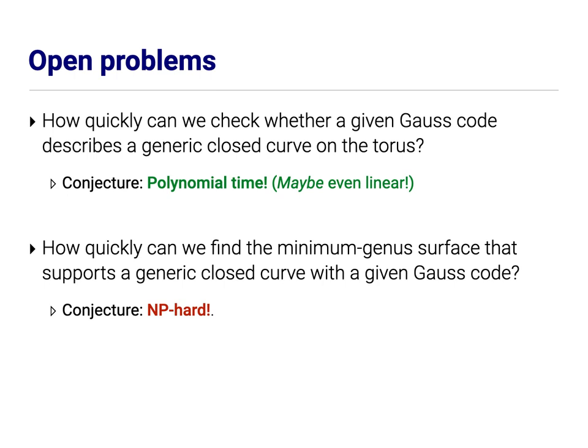So, open question, how quickly can we check whether a given Gauss code describes a generic closed curve on the torus? I think it's plausible that this can happen in polynomial, or maybe even in linear time. But I don't know how to do it. And more importantly, I think it's really unlikely that this problem is NP-hard. There's just not enough structure here. On the other hand, if I want to find the minimum genus surface that supports a generic closed curve with a given Gauss code, that seems much more likely to be NP-hard. But again, I don't know how to prove that. My intuition here is really derived from algorithms for drawing graphs on surfaces. There are linear time algorithms for drawing graphs on the plane, for drawing graphs on the torus, for drawing graphs on the two-hole torus, and so on. But if I want to find the minimum genus surface on which I can draw a graph, that's NP-hard. So, that's the first open question. Let me move on to the second one.